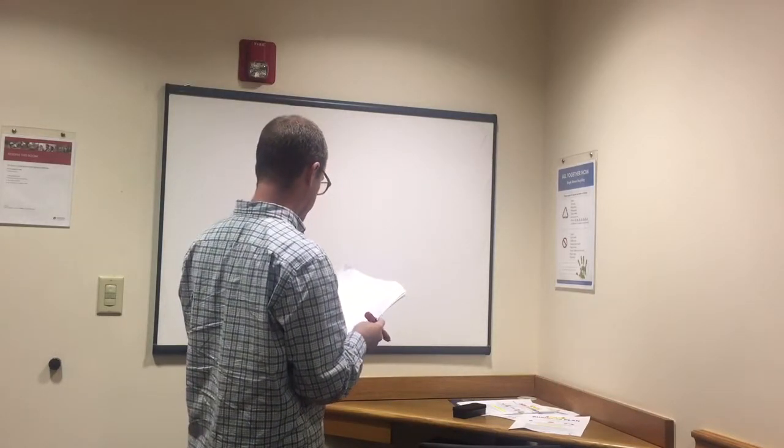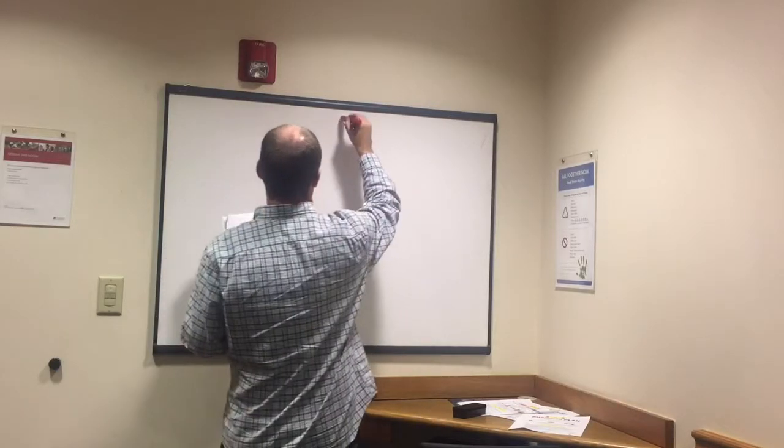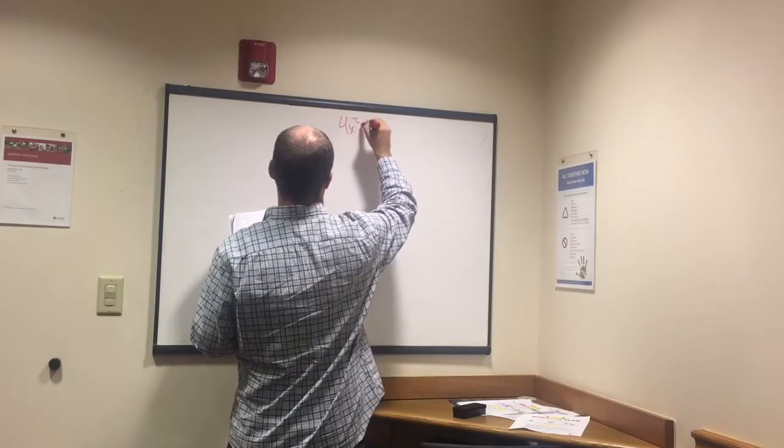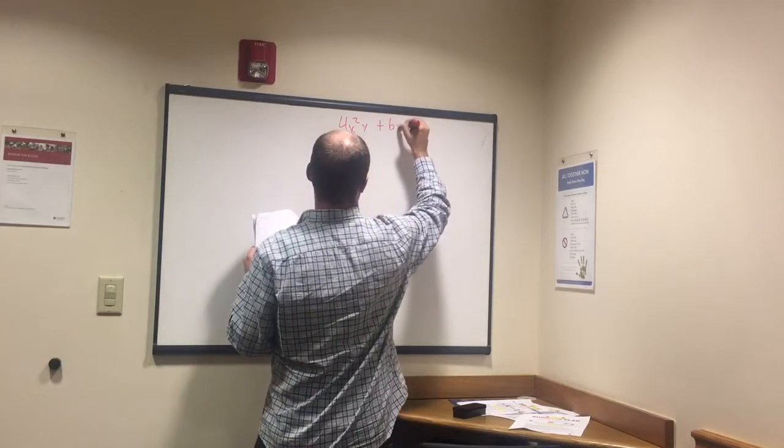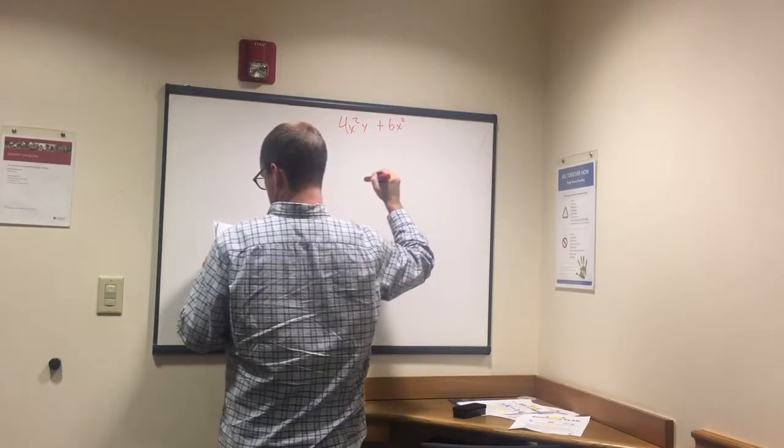Alright we're gonna do another one. This one is long. 4x squared y plus 6x squared y